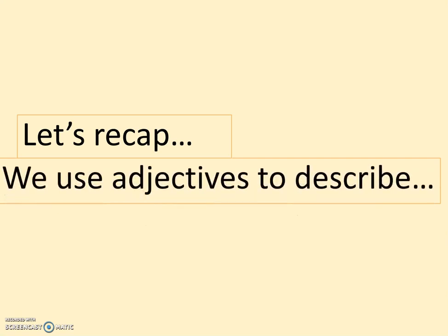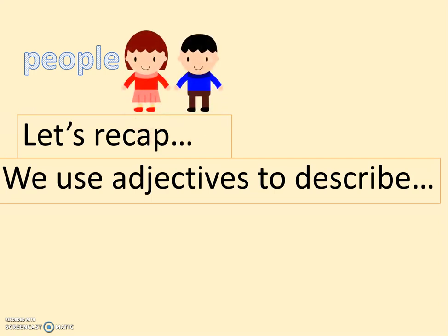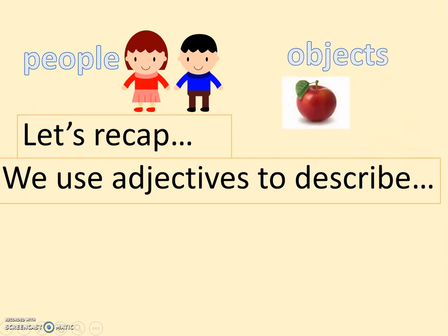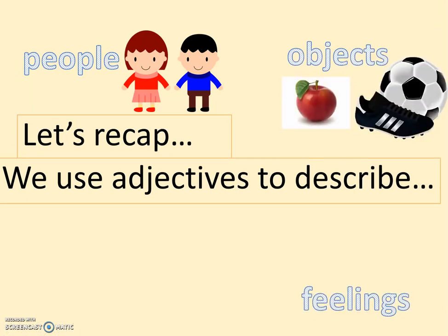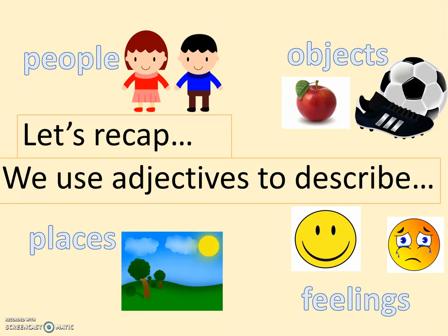We use adjectives to describe many things, such as people. We might say, the boy has black hair. Objects — we might say, the apple is red. Or feelings — the person is happy or the person is sad. We might describe places: the trees are green or the sky is blue.